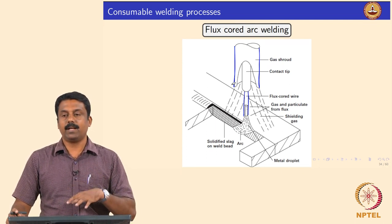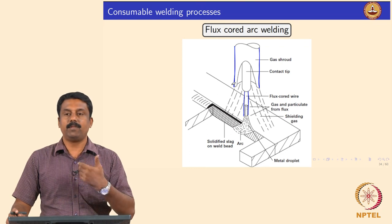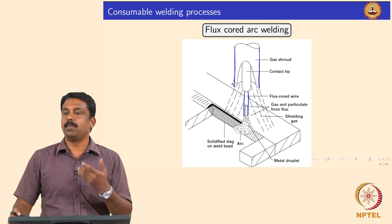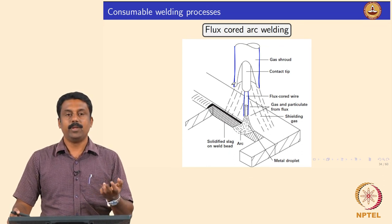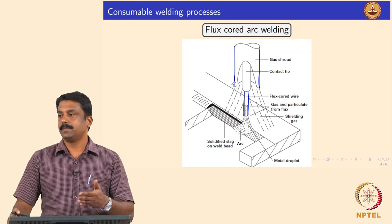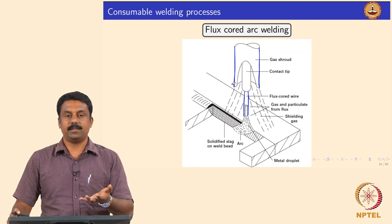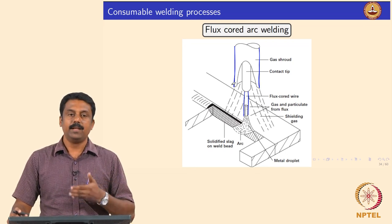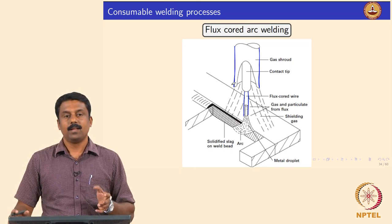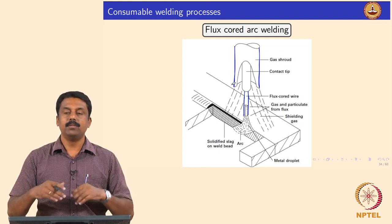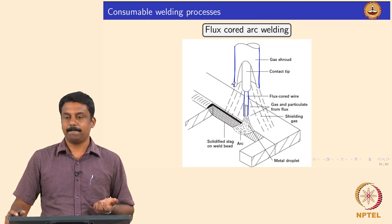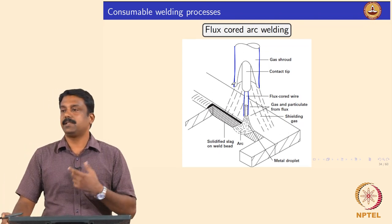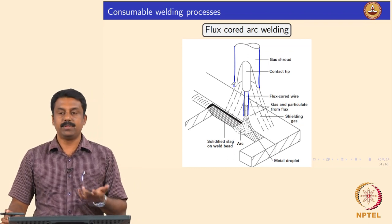In flux-cored arc welding we can also play around with the composition of the flux. In some cases where you want maximum alloying, you want to reduce the concentration of the flux — especially calcium carbonate — so the shielding gas generated is not sufficient to sustain an arc. This process can also be shielded by external shielding.